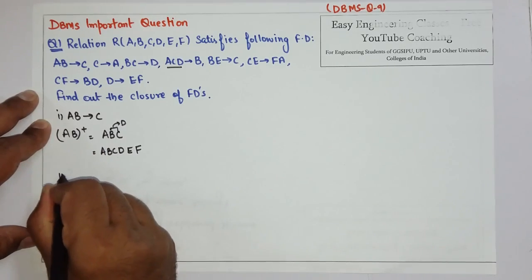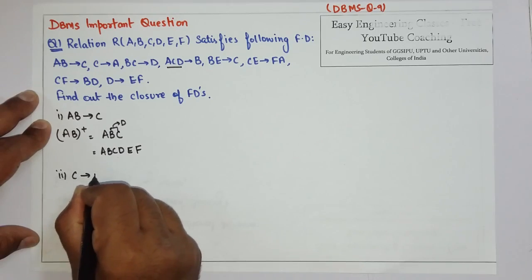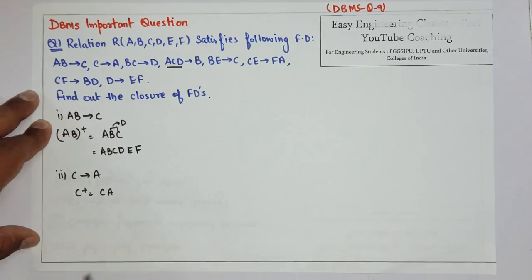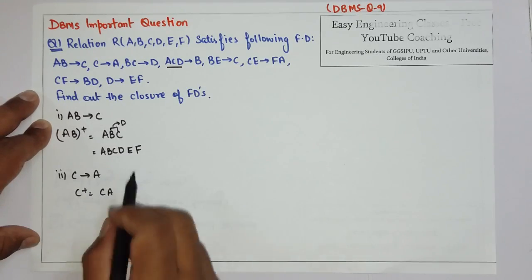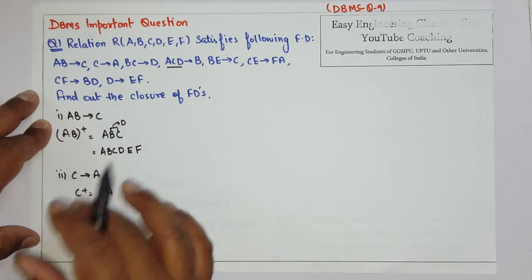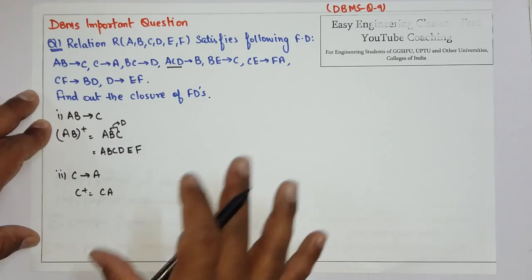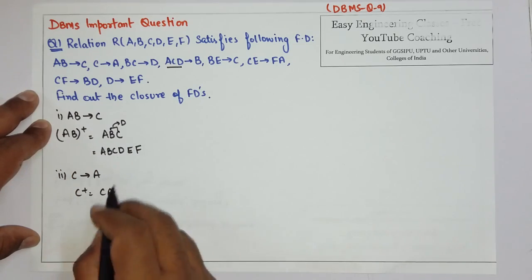Next find the closure for C to A. So C plus will be C, A and then check for the combinations that you can get. So there is no more attribute that you can derive from this two. So the closure of C plus is C, A.